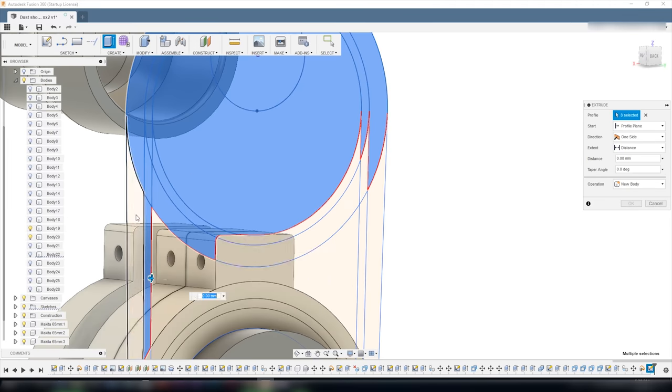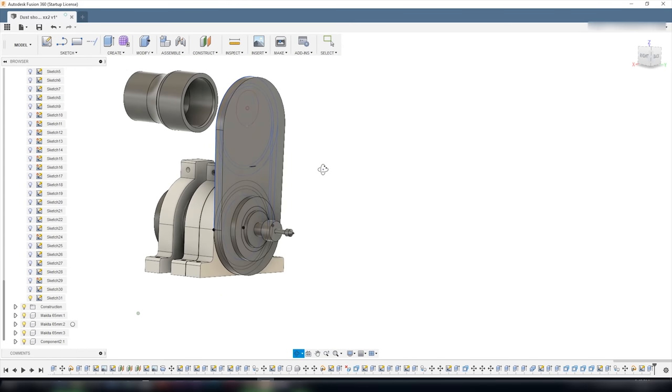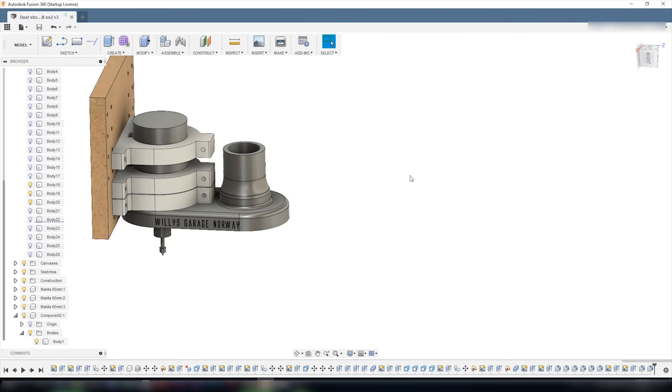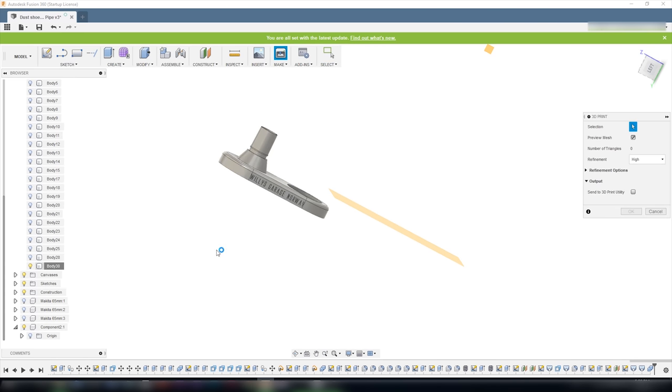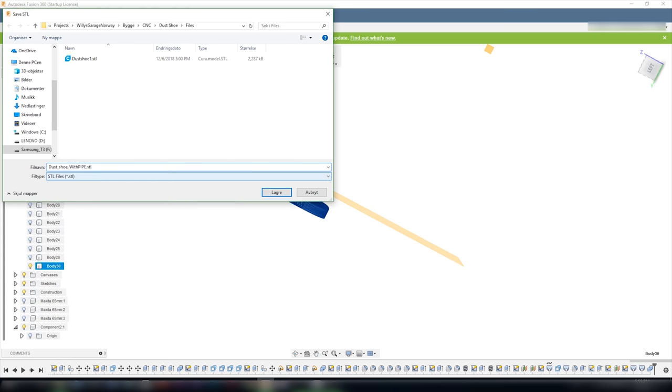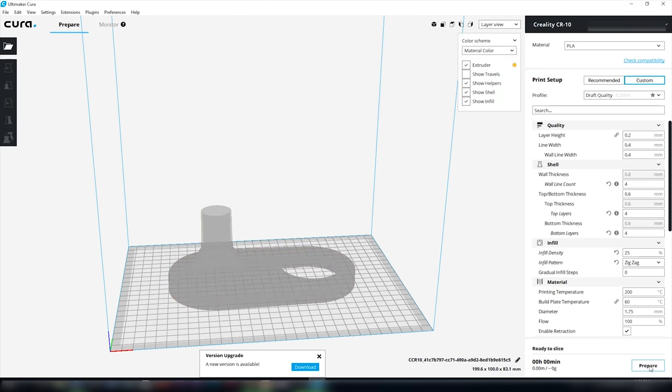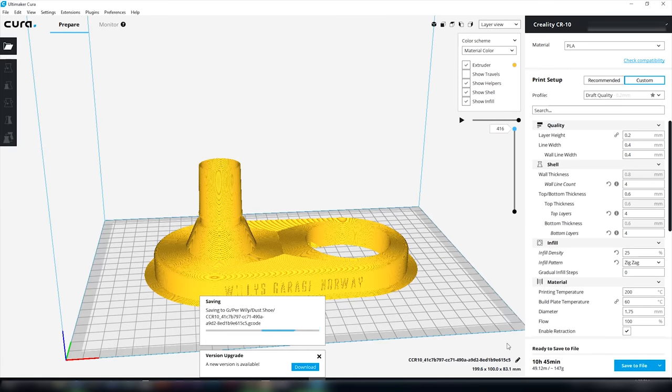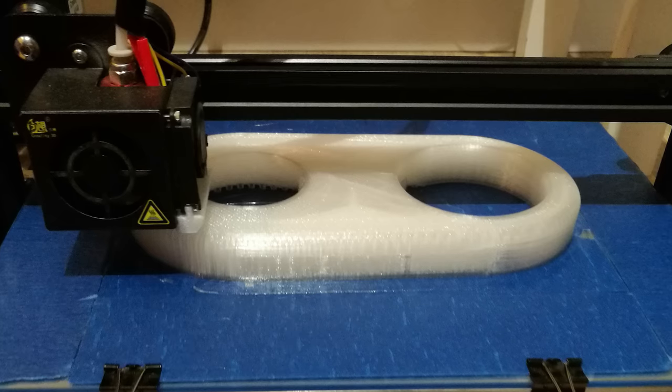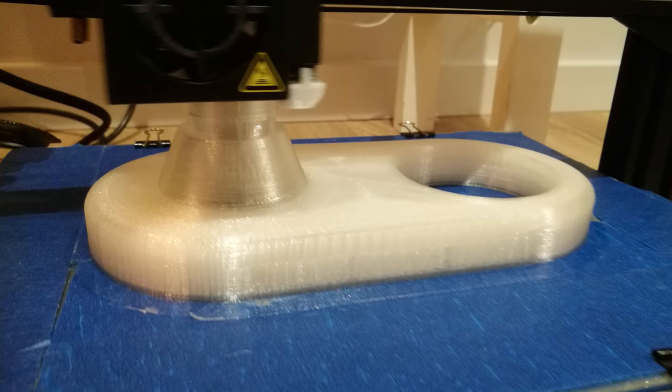This made me come up with a much slimmer, lighter and usable dust shoe. So I fired up my Creality CR10 mini 3D printer and printed the whole dust shoe.